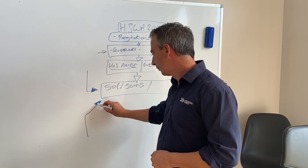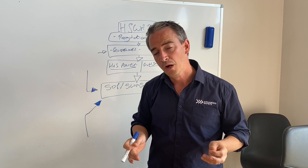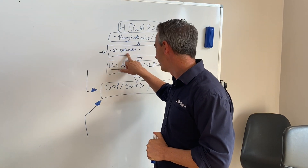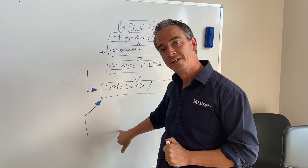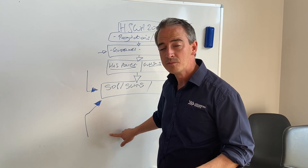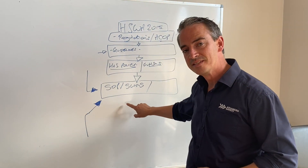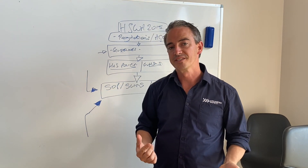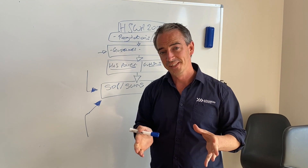Standard operating procedures and safe work methodology statements are really documents that don't tend to change very often. When they do change it's generally due to a change in regulation, a change in guidelines, a change in the direction of the business, or learnings from the men and women on the ground — perhaps a safety incident, or a toolbox talk where someone's come up with a new idea that reduces the risk level. That ideally feeds back into the SOPs or SWMS, filtering through to the way in which the company does it. It's all about continual improvement.